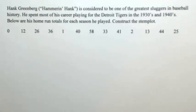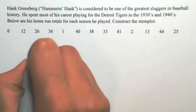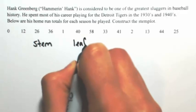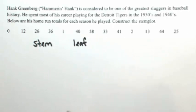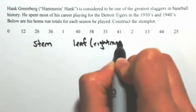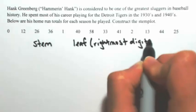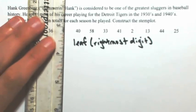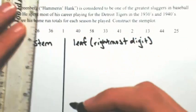When constructing the stem plot, you're going to have two parts: a stem and a leaf. The leaf is the rightmost digit. We're going to separate this into two parts - one is the stem and one is the leaf.